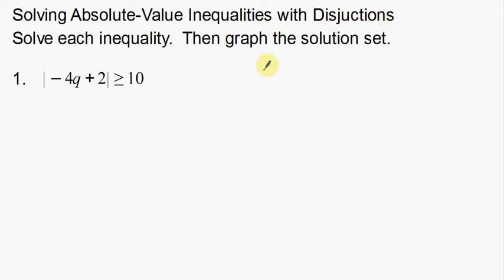If we remember the vocabulary, a disjunction is an inequality that's going to go away from each other. You first heard that when we talked about compound inequalities, where we had two inequalities. Now, as you look at this example, there's only one inequality here. When we solved absolute value equations, we had to split them up and it became two equations. We're going to do the same thing here — split this up and solve two different inequalities, and that's going to create our disjunction.